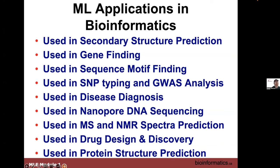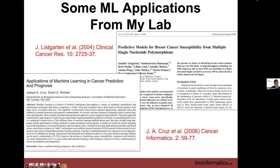In bioinformatics, machine learning has been applied to secondary structure prediction, gene finding, sequence motif finding, GWAS analysis, disease diagnosis, DNA sequencing, spectral analysis and prediction, drug discovery, and protein structure prediction. My own experience started more than 25 years ago — we used neural nets for early metabolomics work, machine learning in cancer susceptibility prediction from SNPs, and wrote one of the first reviews on machine learning in cancer (2006). We've also applied machine learning to protein secondary and tertiary structure prediction and predicting spectra.